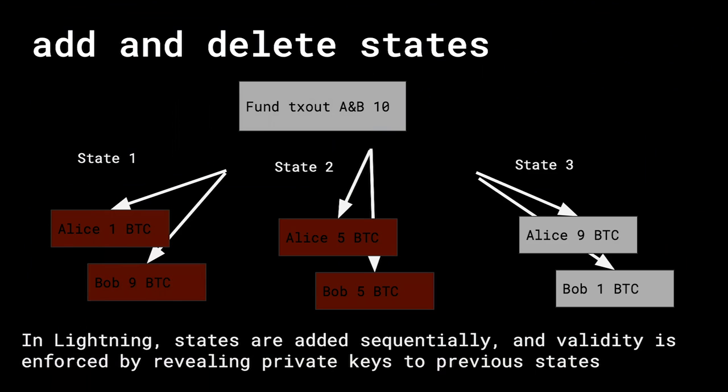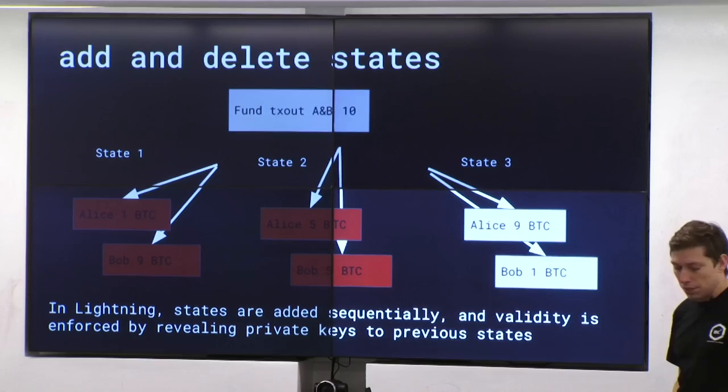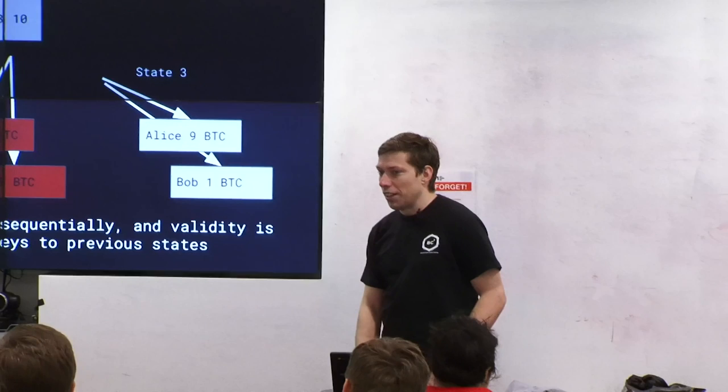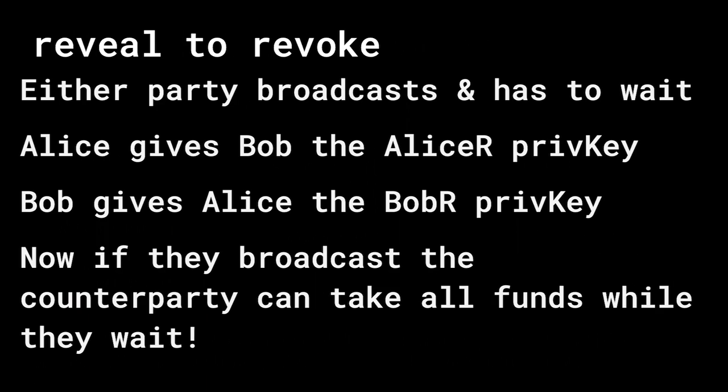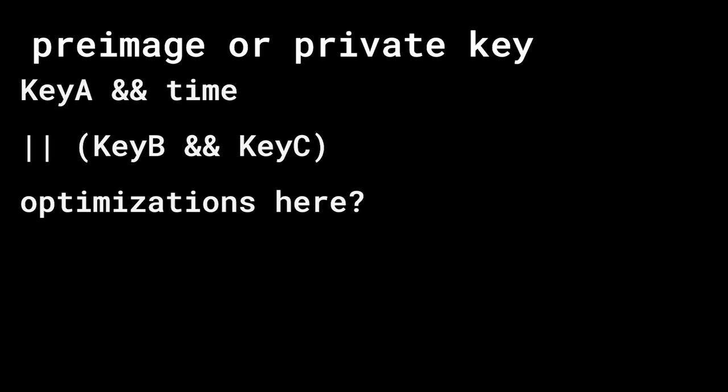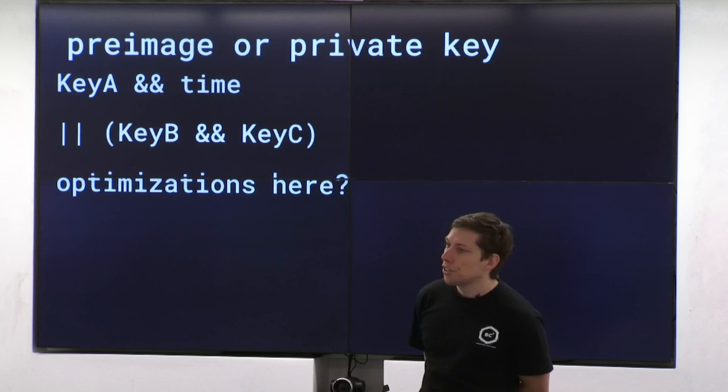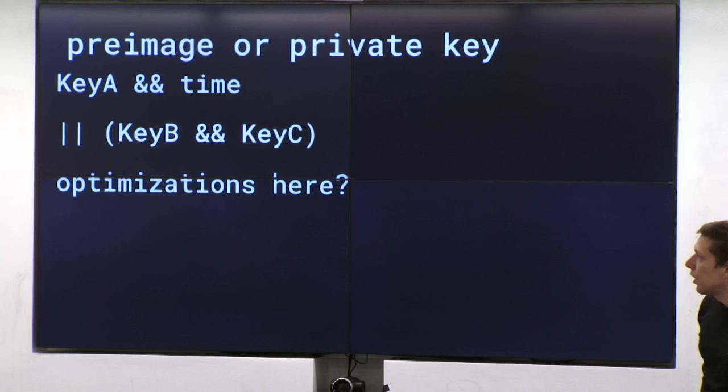Any questions about that? It was covered last time but it can be complicated. So some optimizations we'd want to make: either party broadcasts and has to wait. Alice gives Bob the Alice-R private key; Bob gives Alice the Bob-R private key. If they broadcast, the counterparty takes all the funds. The basic idea of the script is key A can be used with a wait of a day, or you can have a signature from both key B and key C.